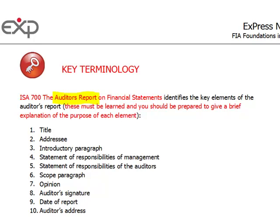What constitutes that report? First, it's the title, so that nobody gets it wrong — it is the auditor's report. Then there's the addressee, so for whom this report is aimed or for whom it is written. And the addressee, always remember, is the shareholders of the company.